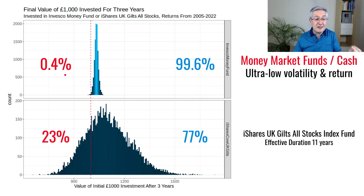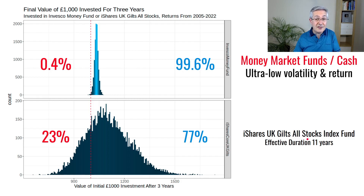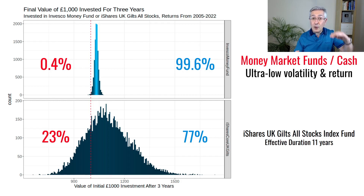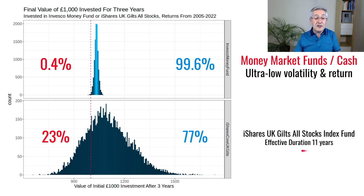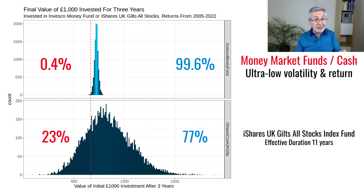Of course, there's not much upside — we're not going to get much return for very little risk. The chance of ending up with less than we started is just 0.4%. Whereas if we have even a government bond issued by the UK government — a Gilt — using the iShares UK Gilts All Stocks Index Fund as an example, where the duration is 11 years, there's a roughly one-in-four chance we'll make a loss over a three-year period. Duration is a measure of risk for fixed income: the longer the duration, the greater the volatility. So even in fixed income, it's key to keep volatility low.